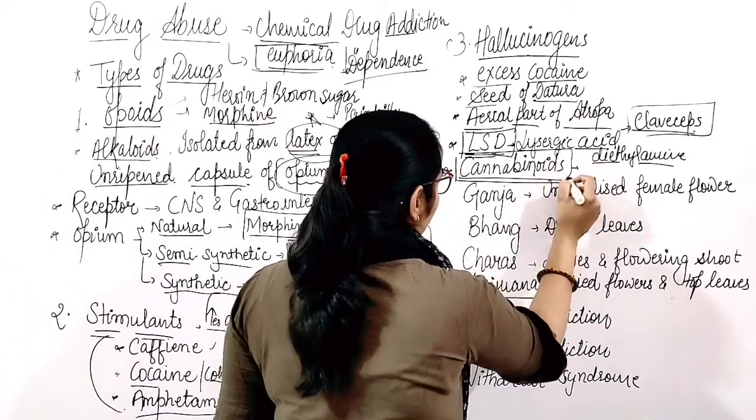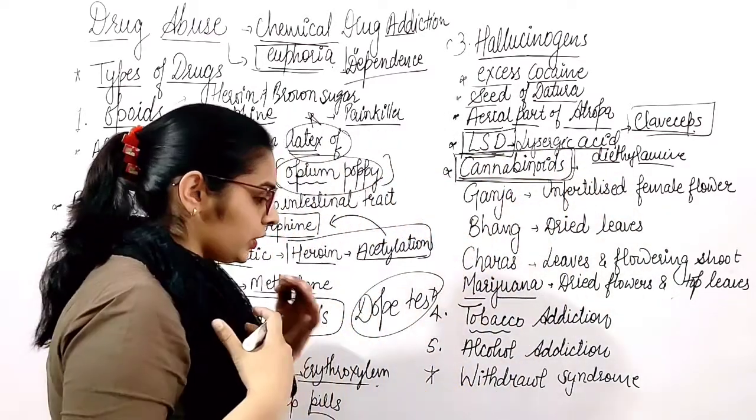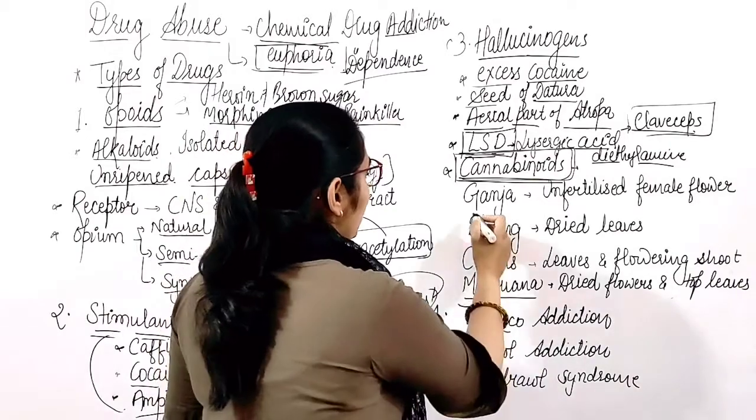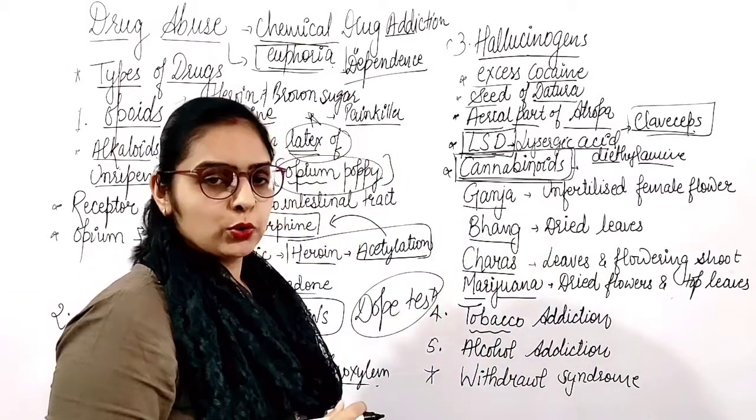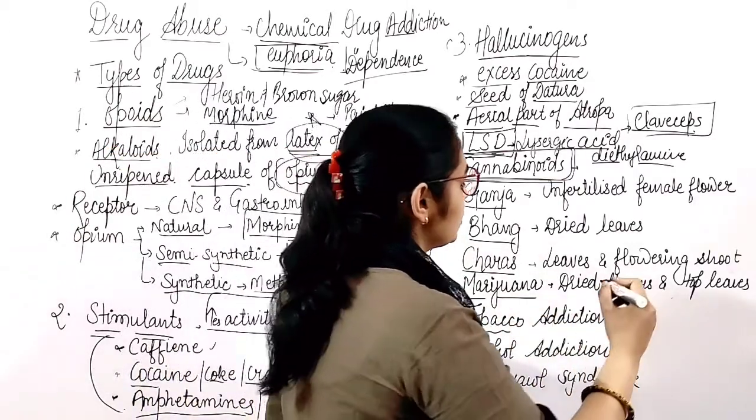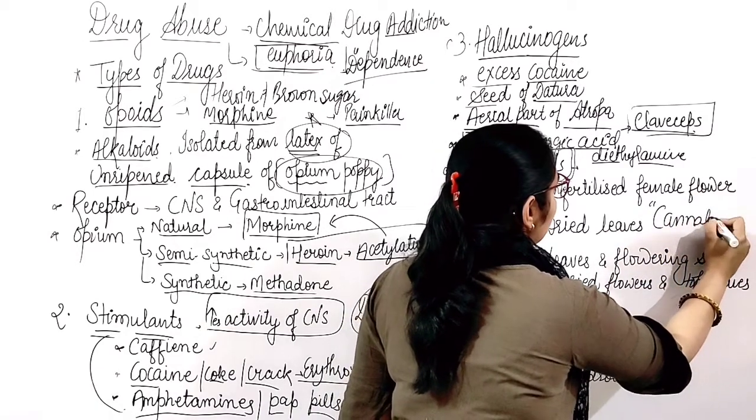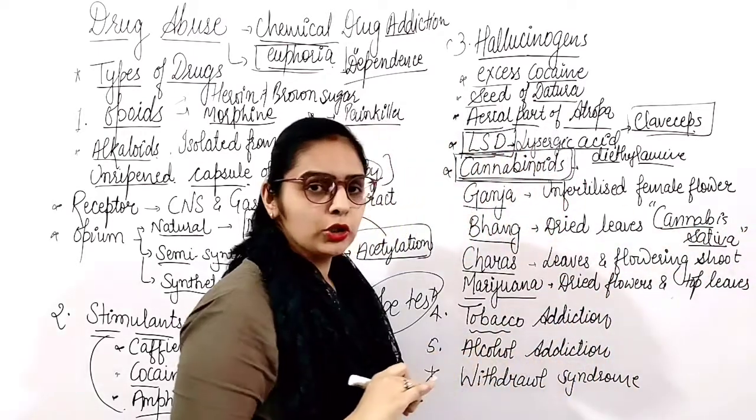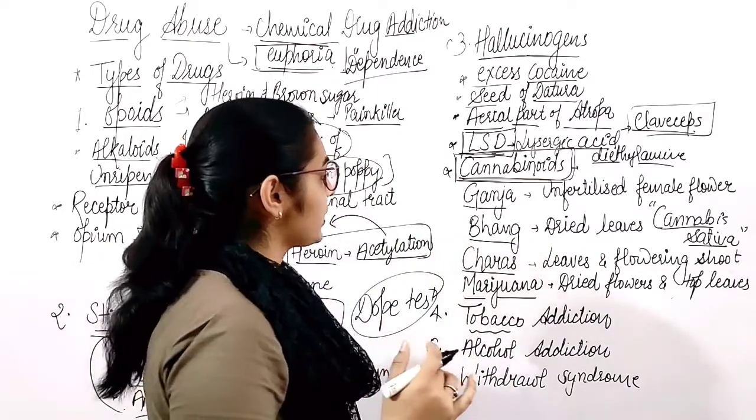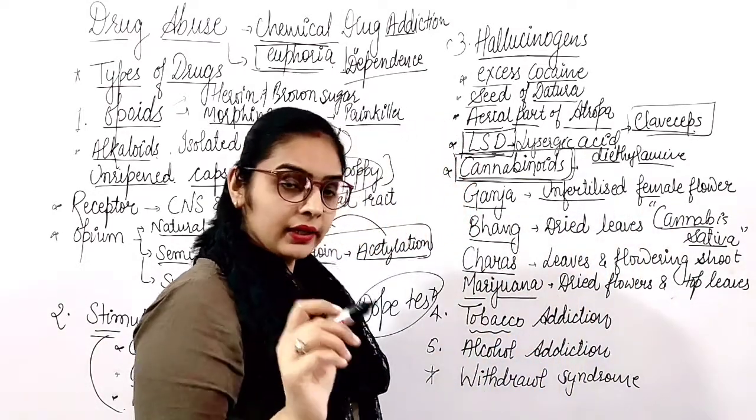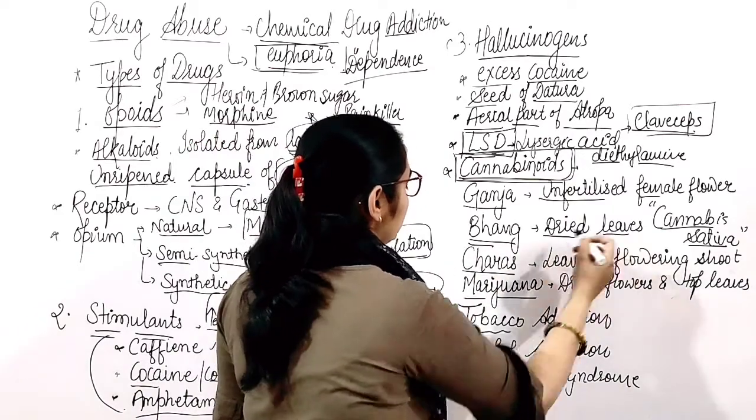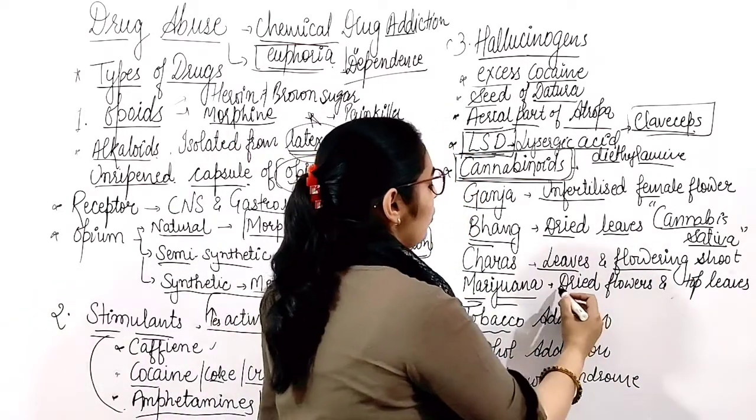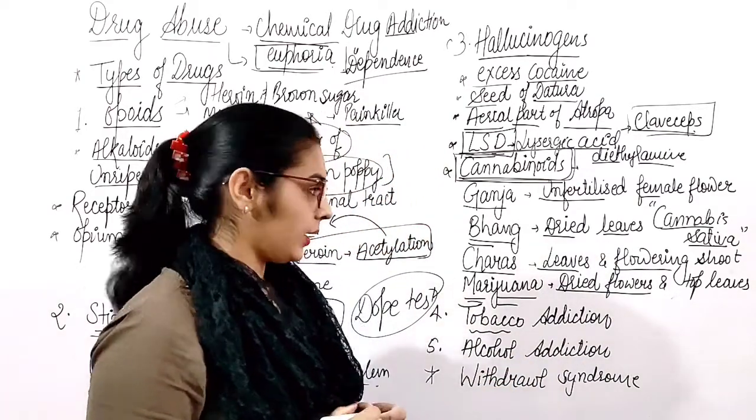Next, cannabinoids are hallucinogens that affect cardiovascular activities and increase respiration. For example, ganja, bhang, charas, hashish, and marijuana. These are produced from the cannabis sativa plant. Ganja is the unfertilized female flower. Bhang is made with dried leaves. Charas or hashish is made with leaves and flowering shoots. Marijuana is made with dried flowers and top leaves.